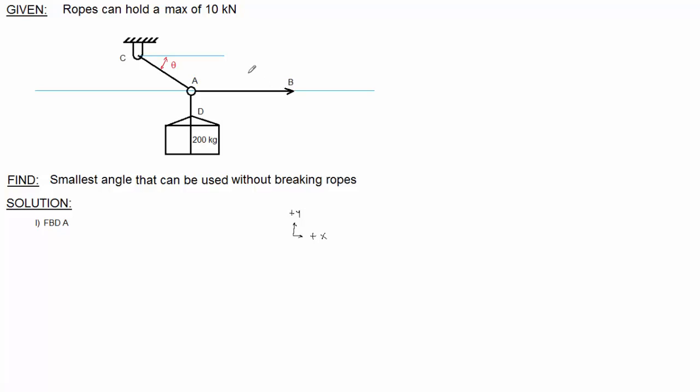I would not recommend drawing a free body diagram any time you see this hash notation. So this point C up here is an anchor. This hash notation means it's attached to the rest of the world. If you try to draw a free body diagram of this, you're going to have to have a whole bunch of unknowns.